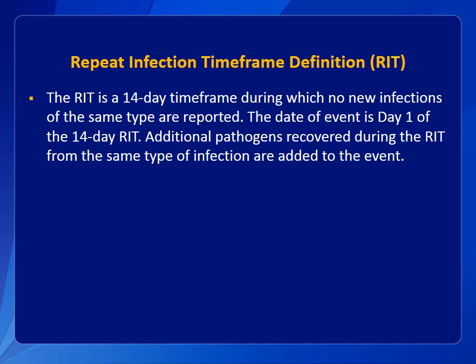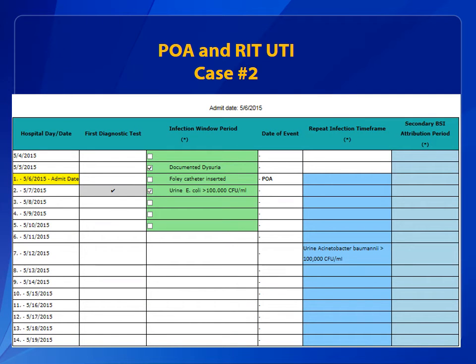Now let's review the NHSN definition of the repeat infection timeframe. The repeat infection timeframe, or RIT, is a 14-day timeframe during which no new infections of the same type are reported. The date of event is day one. Additional pathogens recovered during the RIT from the same type of infection are added to the event. Let's look at an example.